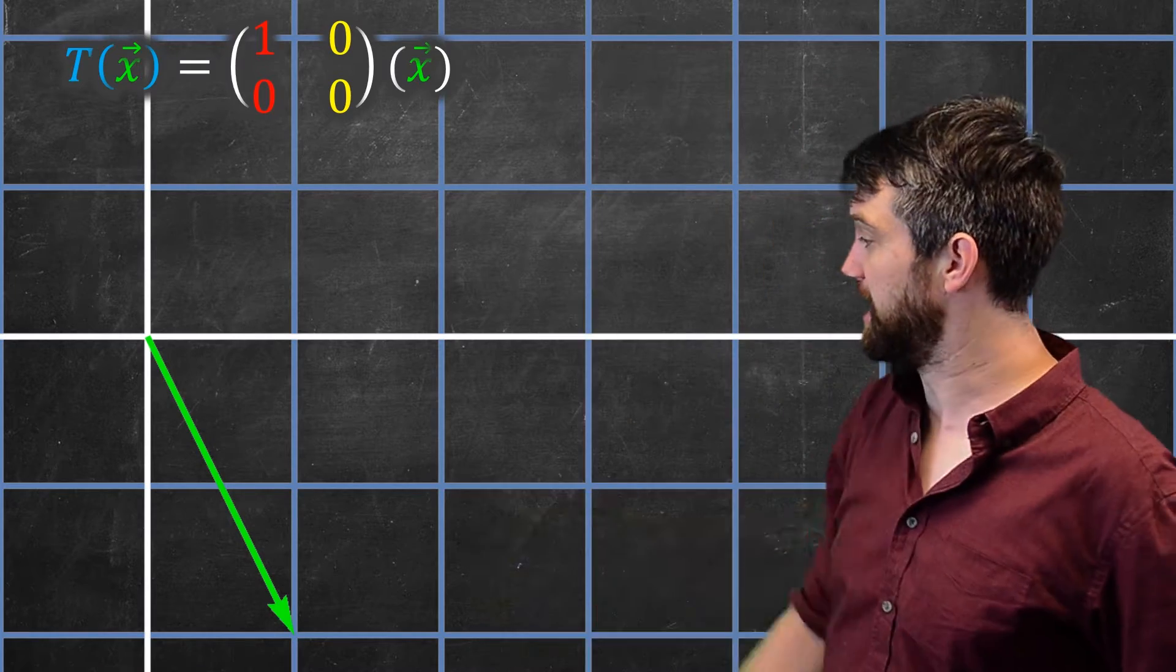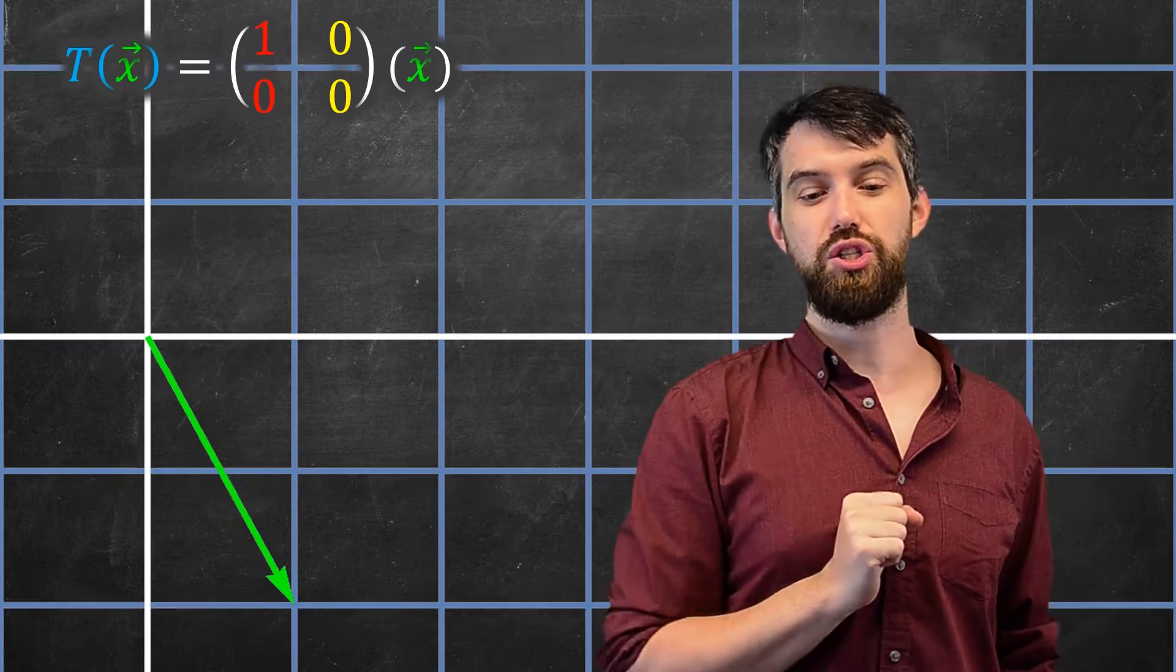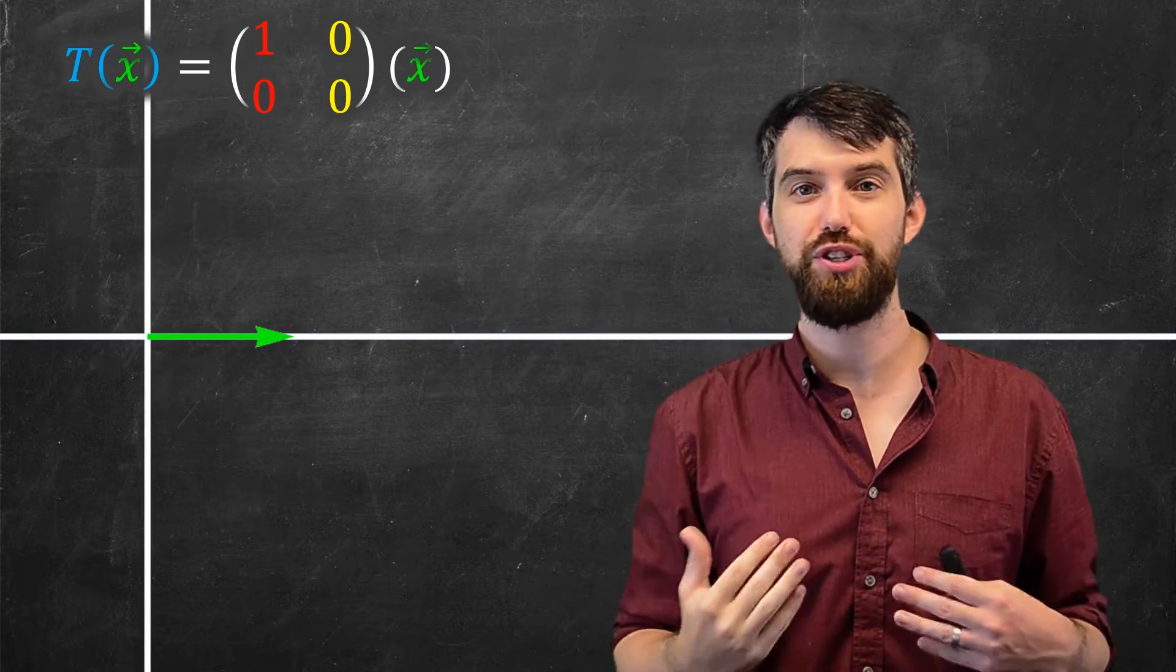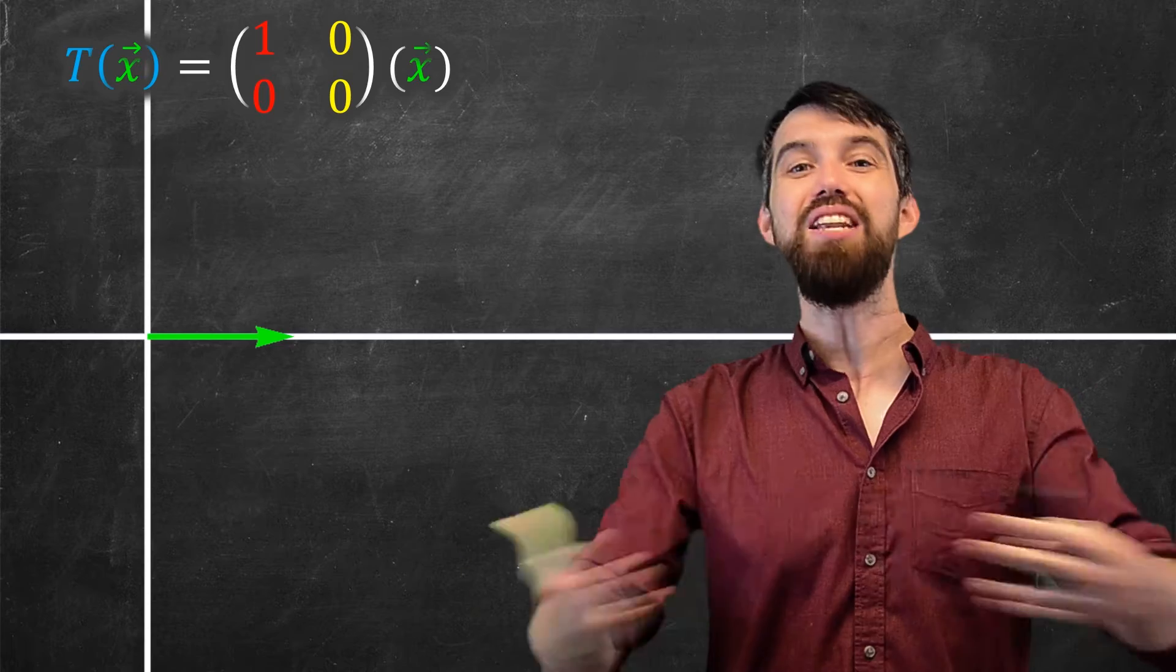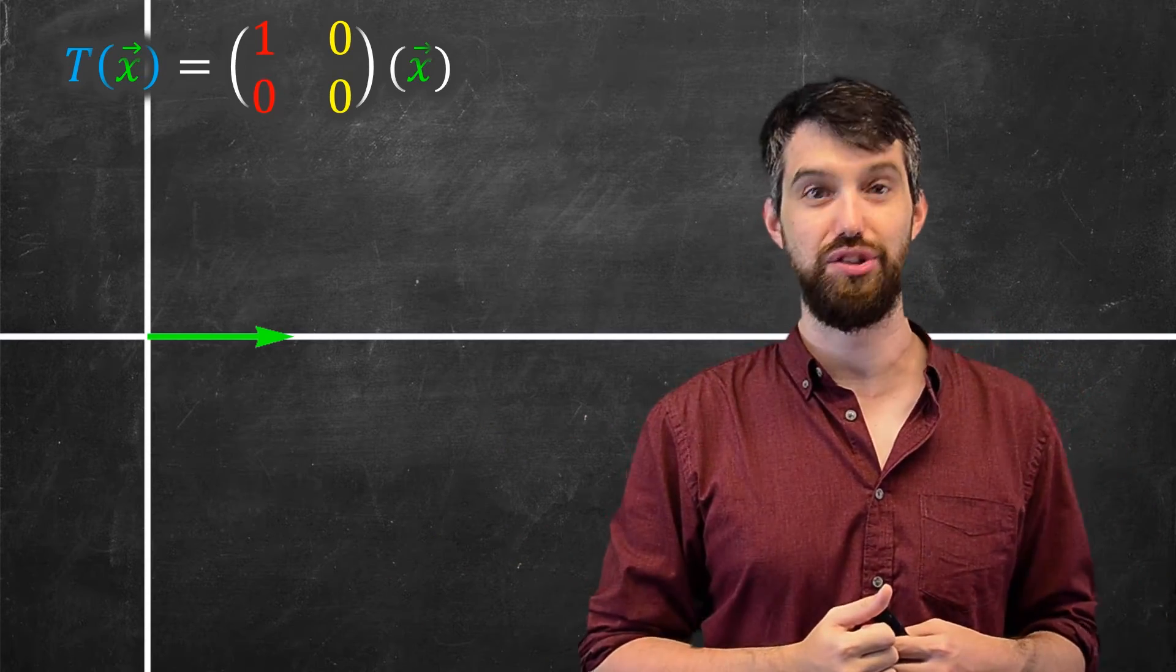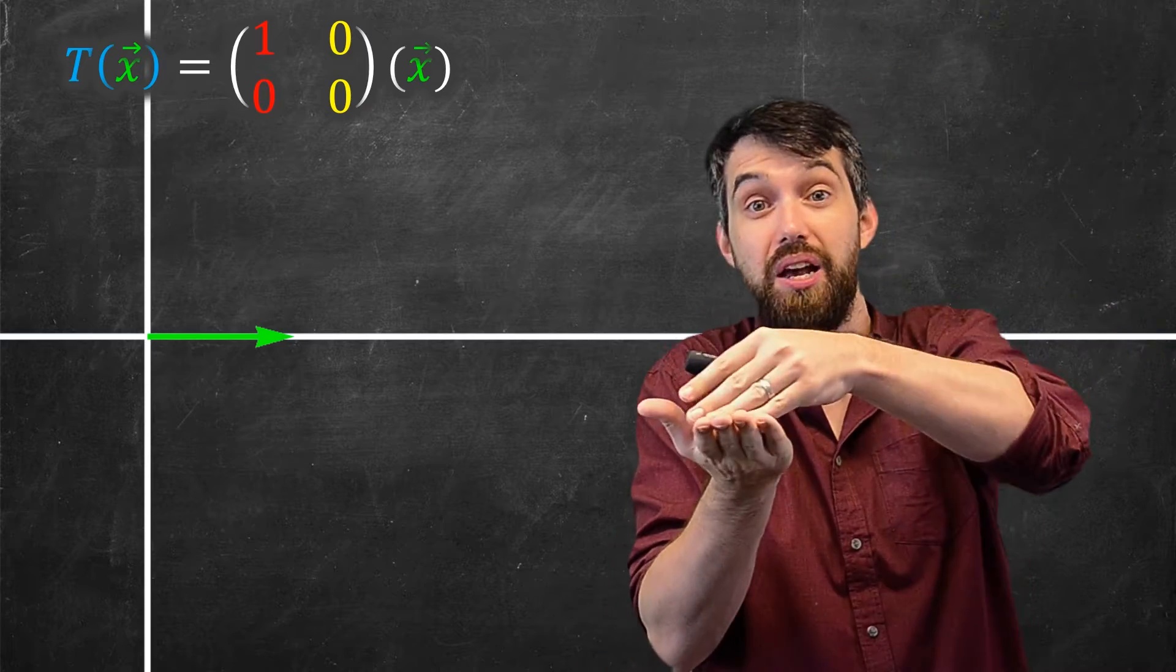And what it does is vertical projection. It takes everything, the entire plane, and it just collapses straight down vertically onto the x-axis. It's vertical projection. And then what the end result of this is all the vectors have to lie down on the x-axis. There's no more grid lines because everything's being compressed down.